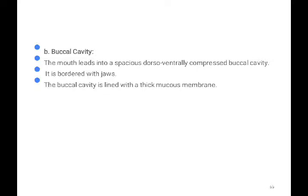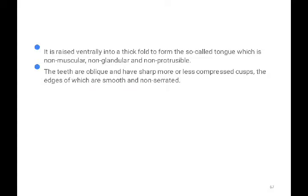The buccal cavity has a thick mucous membrane. The teeth of the shark are modified placoid scales and they are homodont. These are very important features you should remember — they can be asked as MCQs. There is a ventrally raised thick fold which forms the so-called tongue.